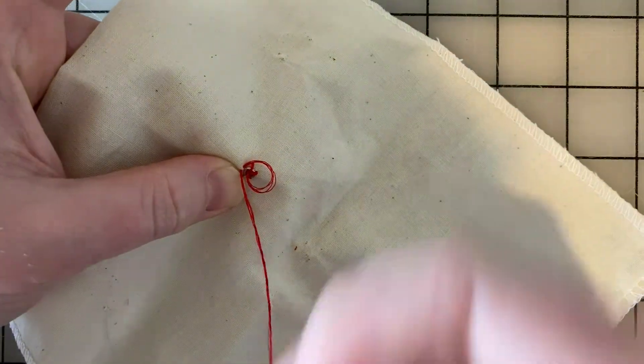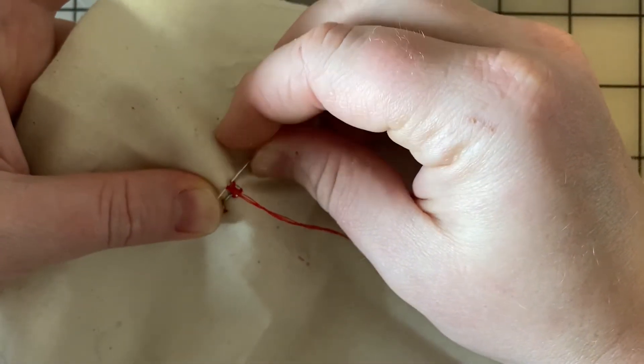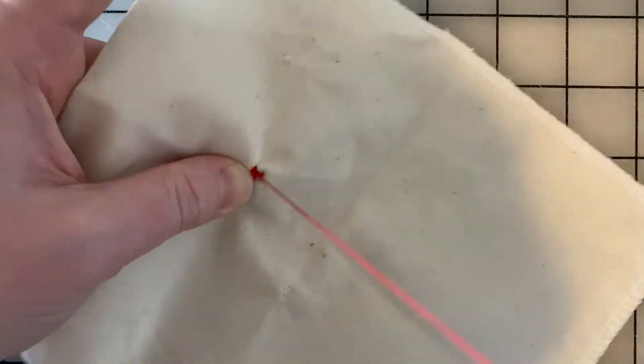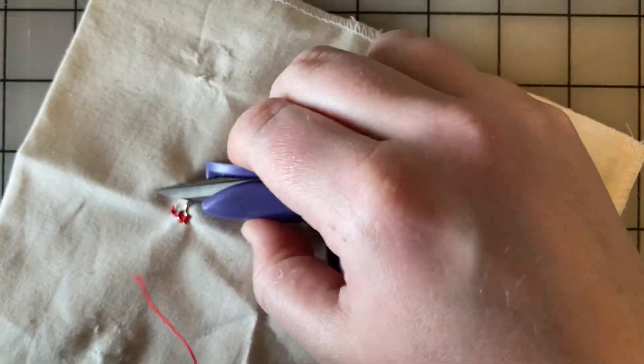And when we're ready to tie a knot, we'll just take a bite and tie your knot. We always tie two, take a bite, send your needle back through your loop. And that's the bar, easy as that.